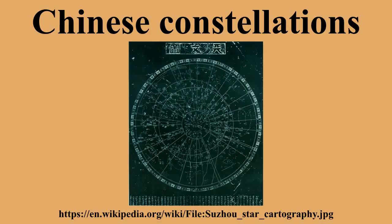The Heavenly Market Enclosure covers the modern constellations Serpens, Ophiuchus, Aquila, and Corona Borealis, and parts of Hercules. The 28 mansions are grouped into four symbols, each associated with a compass direction and containing seven mansions. The sky around the south celestial pole was unknown to ancient Chinese and therefore not included in the three enclosures and 28 mansions system. However, by the end of the Ming dynasty, Zhu Guangqi introduced another 23 asterisms based on European star charts, which were incorporated into traditional Chinese star maps.